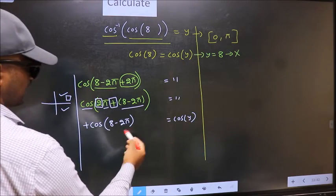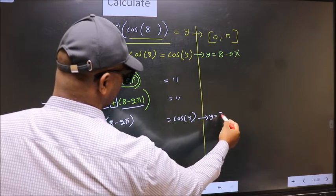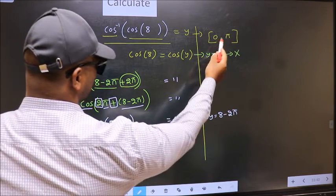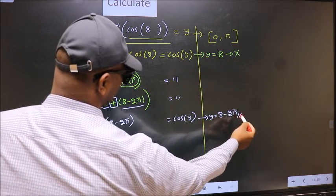Comparing both sides, we get y to be 8 minus 2π. Does this lie in this interval? Yes. So this is our answer.